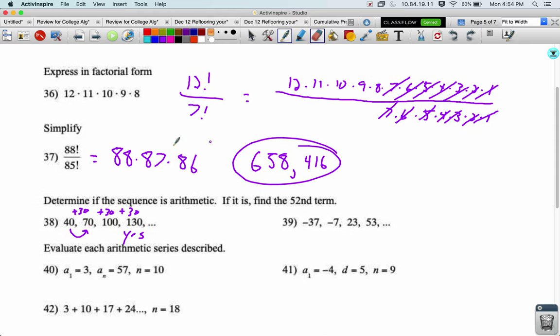We're being asked for the 52nd term, so we're gonna say a sub 52 equals our first term 40 plus our common difference 30 times not 52 but 51. To get to the 52nd term, we didn't add 30 to get to the first one, we only add that 30 fifty-one times. So 40 plus 30 times 51 is 1570.